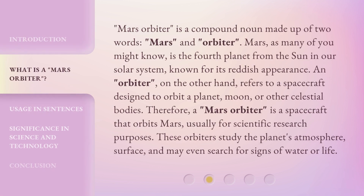Mars Orbiter is a compound noun made up of two words: Mars and Orbiter. Mars, as many of you might know, is the fourth planet from the Sun in our solar system, known for its reddish appearance. An orbiter, on the other hand, refers to a spacecraft designed to orbit a planet, moon,